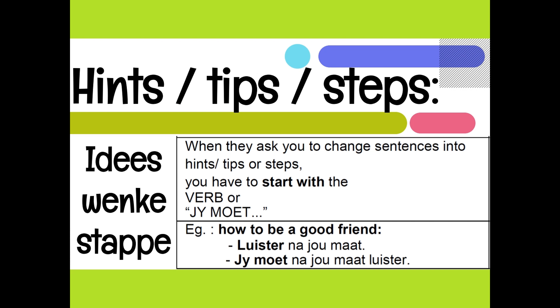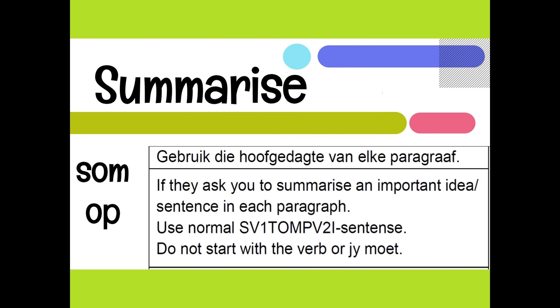Your hints, tips, or steps would be idees, wenke, or stappe. When they ask you to change sentences into hints, tips, or steps, you have to start with the verb or 'jy moet'. For example, 'how to be a good friend' — 'Luister na jou maat.' There we've got the verb first. Or you could say 'jy moet na jou maat luister.' If there is a negative, you would say 'jy moet nie na jou maat luister nie.' But that's not how to be a good friend. So make sure you understand what you need to do. When you summarize, you use the main ideas of each paragraph and summarize the important ideas using a normal sentence — you do not start with a verb or 'jy moet'.